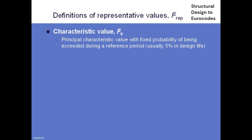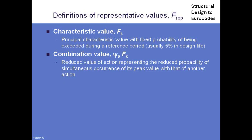So what can the representative values be? It could be the full characteristic value if the action you're considering is what's called a leading action. For example, if traffic and wind are acting together and traffic produces a much bigger bending moment, I would take the full characteristic value of traffic in the combination. Wind, however, won't have its full 5% fractile value at the same time, so we reduce it by multiplying its characteristic value by a reduction factor psi_0, called the combination factor. psi_0 is given in Eurocode 0 and the national annex.